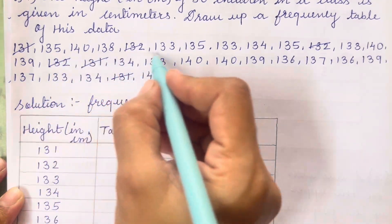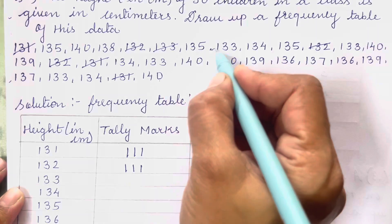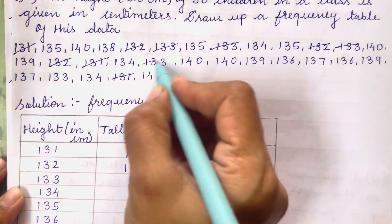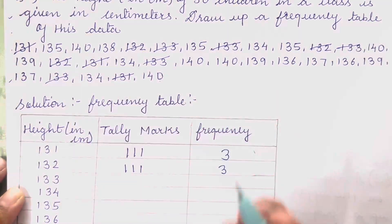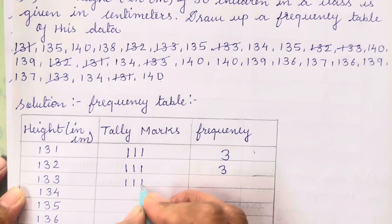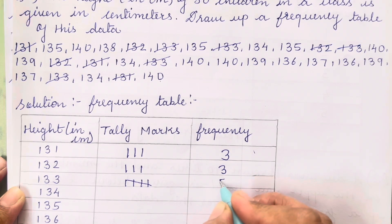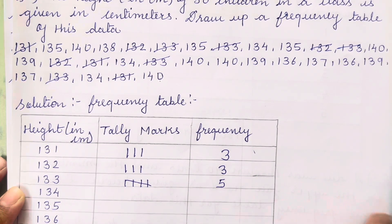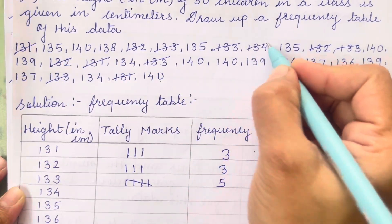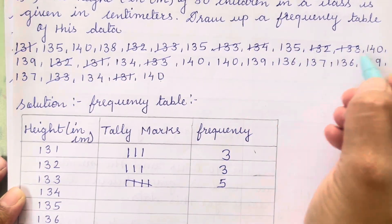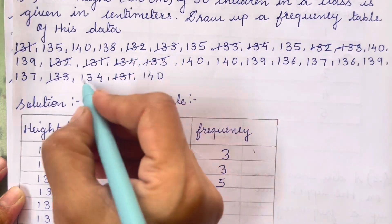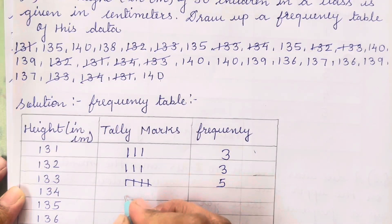For 133: counting gives us 1, 2, 3, 4, 5 — so the frequency is 5. For 134: counting gives 1, 2, 3 — again the frequency is 3.